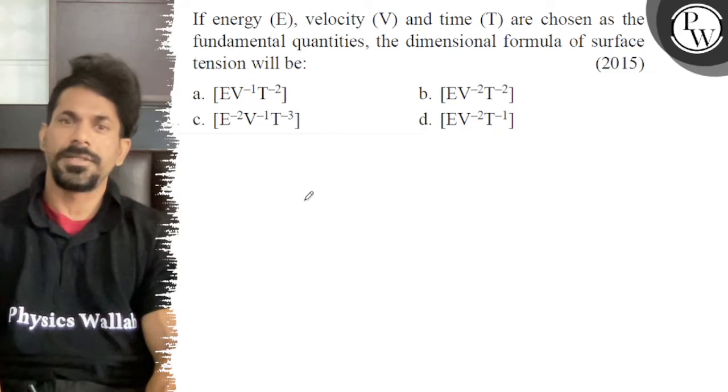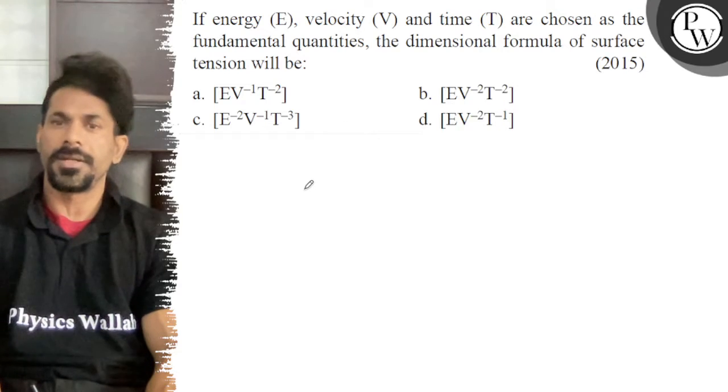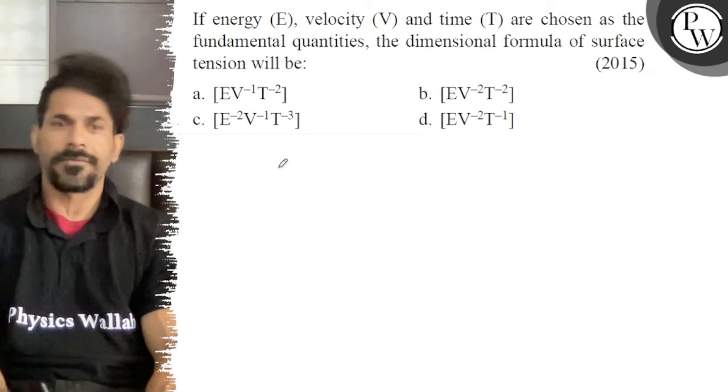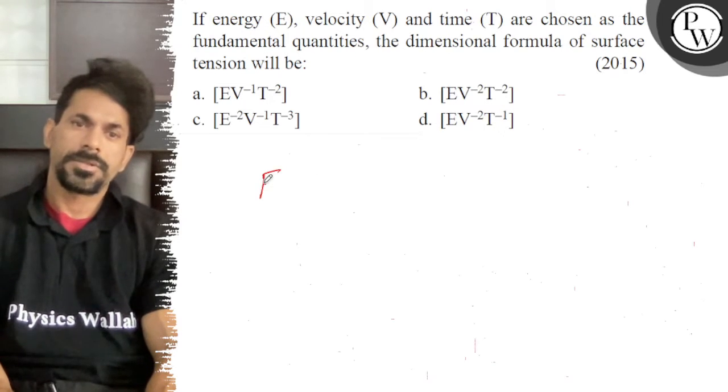Let's see the question. If energy E, velocity V, and time T are chosen as the fundamental quantities, the dimensional formula of surface tension. The surface tension, which is T, which is called force per unit length.